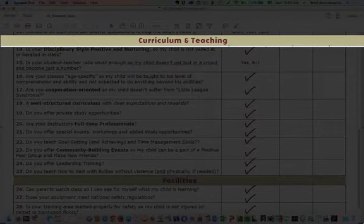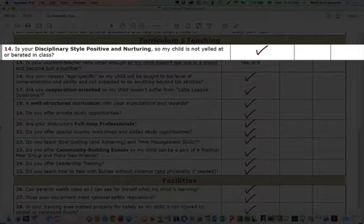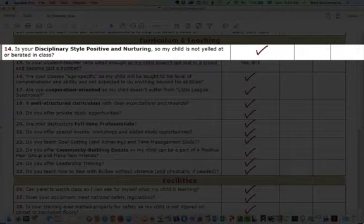The next category is curriculum and teaching. So this is all about what's going to happen when your child is out on the mat and how that is structured for you so you can understand what your child is going to go through and needs to learn to advance. So number 14 is, is your disciplinary style positive and nurturing? And this is one that traditionally in martial arts, it was very regimented, military-like, where nobody laughed, nobody smiled, and it was just very much stone-faced. And children were kind of just taught like that. And it's not the best way in our opinion of how to teach children.